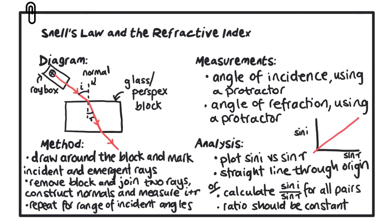Finally, calculate the sine of the angle of incidence and the sine of the angle of refraction. Plotting sine i on the y-axis against sine r on the x-axis should give a straight line through the origin, verifying Snell's law. Alternatively, calculate sine i over sine r for all pairs — the ratio should be constant. Pause the video to copy this summary into your notes.